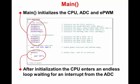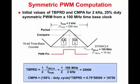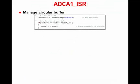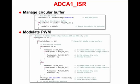After initialization, the CPU enters an endless loop waiting for an interrupt from the ADC. A symmetrical 2 kHz PWM waveform with an initial 25% duty cycle will be generated using a 100 MHz time-based clock. Dividing the PWM period by the time-based clock period, a full cycle requires 50,000 clock ticks. Since a symmetrical waveform is generated from the up-down counter, the period register value is set to 25,000. For an initial 25% duty cycle, the compare register is set to 18,750. In the ADC ISR, the ADC result register is read and values are managed in a 50-point circular buffer. A section of code will modulate the PWM waveform between 10% and 90% duty cycle.